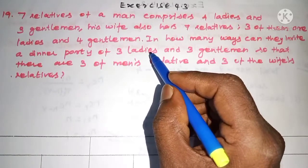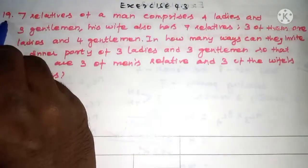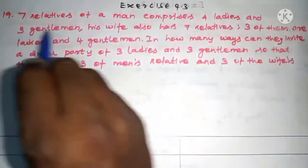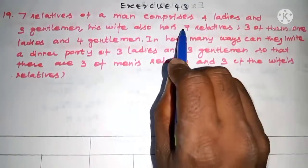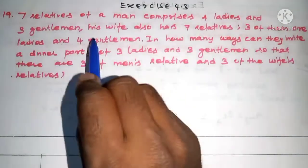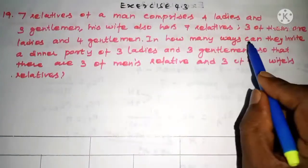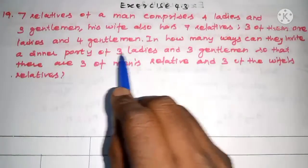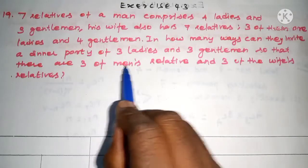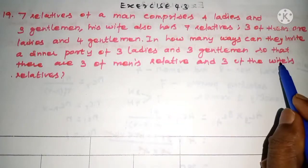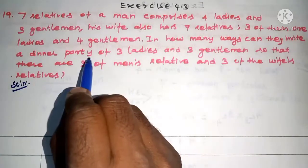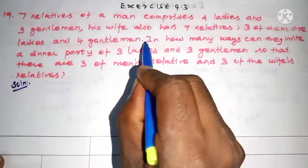Hi students, this is Salama Max Tuition, 11th standard, exercise 4.3, question number 19. Seven relatives of a man comprises four ladies and three gentlemen. His wife also has seven relatives: three of them are ladies and four gentlemen. In how many ways can they invite a dinner party of three ladies and three gentlemen so that there are three of the man's relatives and three of the wife's relatives?